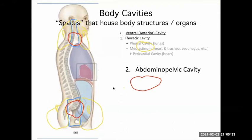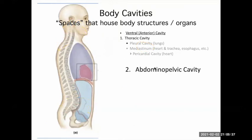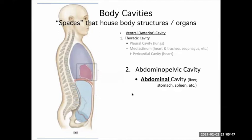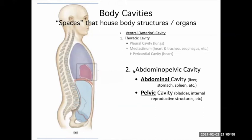Within your abdominal cavity, which is subdivided from the abdominal pelvic cavity, you have organs like the liver, stomach, spleen, and most of your small intestines. Then your pelvic cavity — separated roughly by the top of the hip bones — contains your bladder and internal reproductive structures.